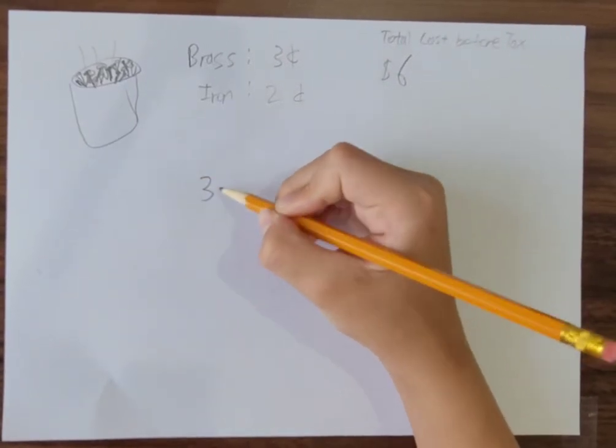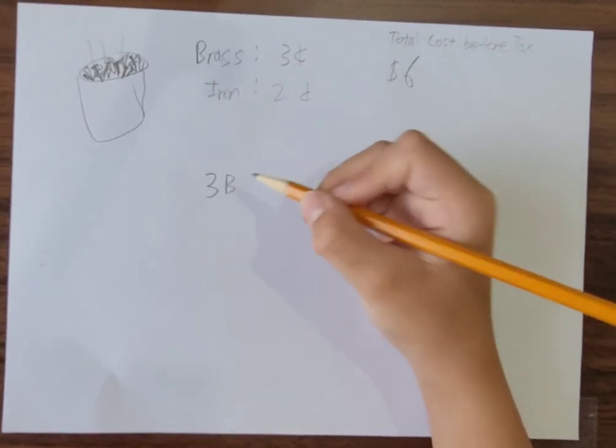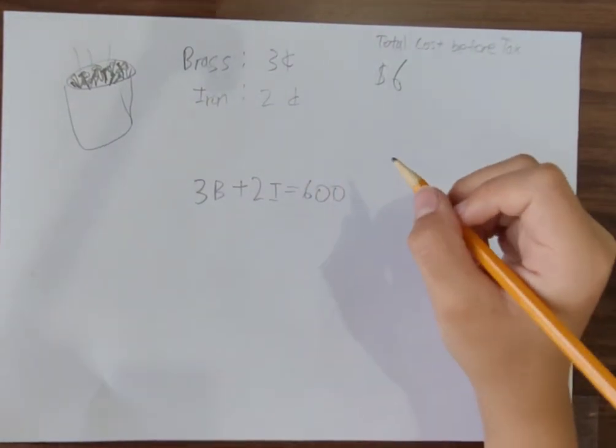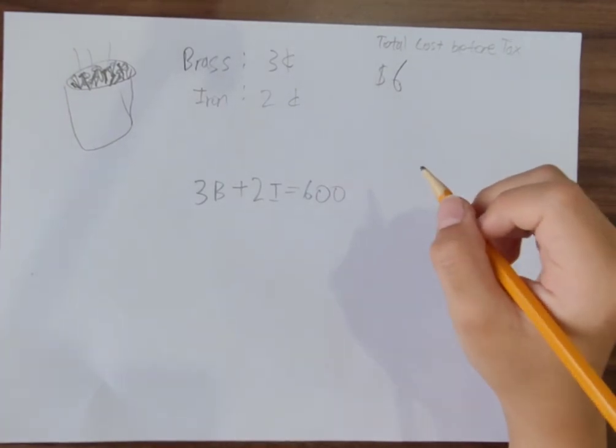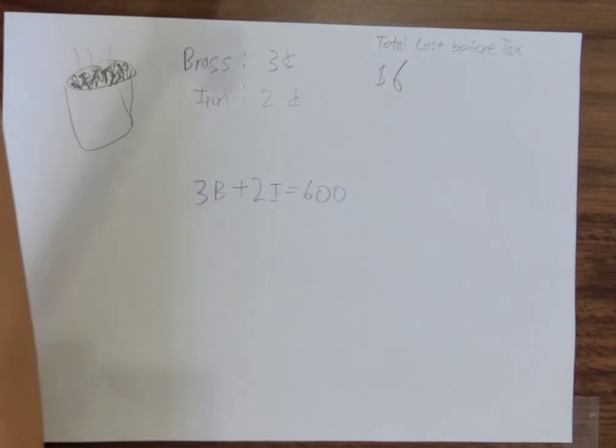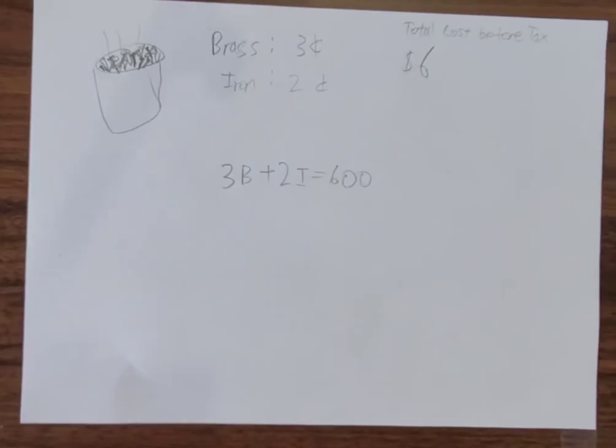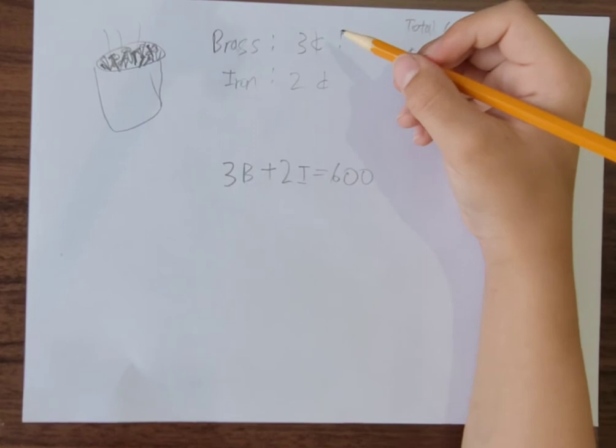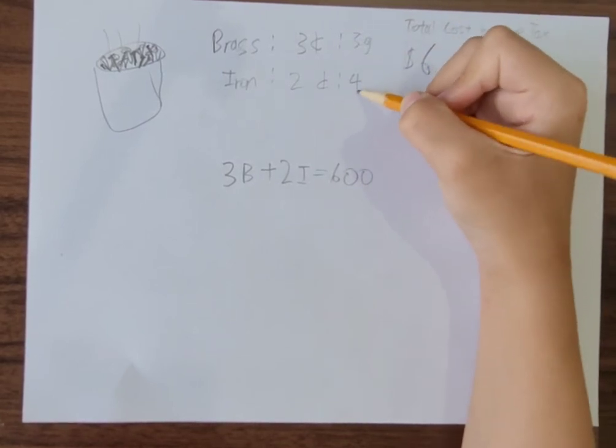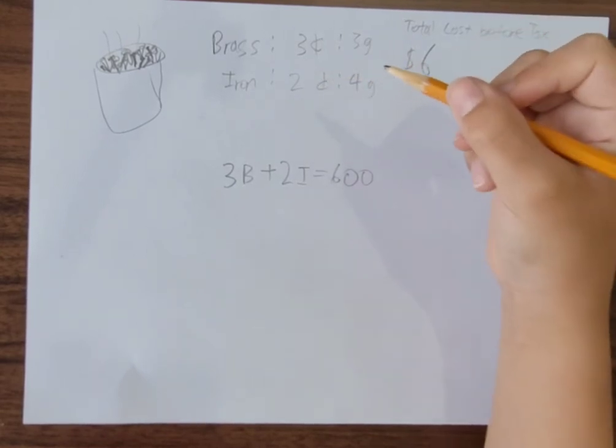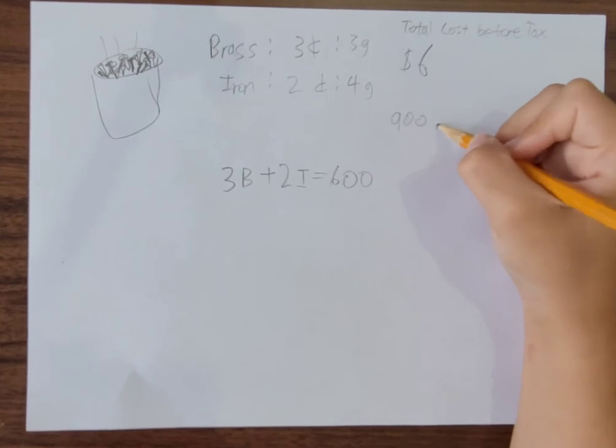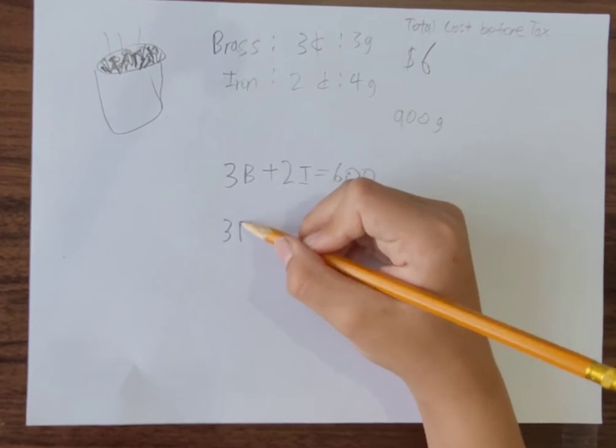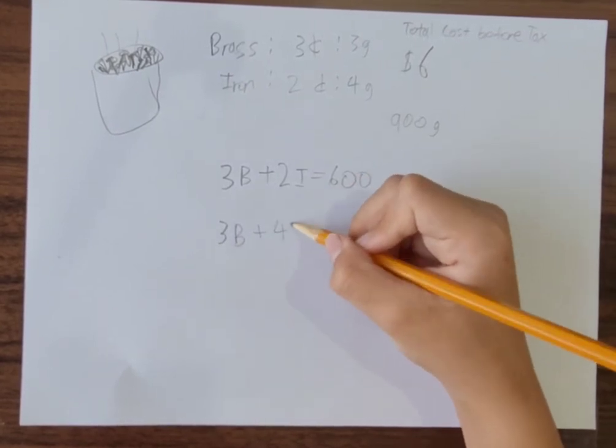So let's see. There are $0.03 for every brass nail, so 3B plus 2I equals 600 cents. Here we can use the substitution method. We also need one more equation. The brass nails are 3 grams, and the iron nails are 4 grams, and they all add up to 900 grams. So again, 3B plus 4I equals 900.